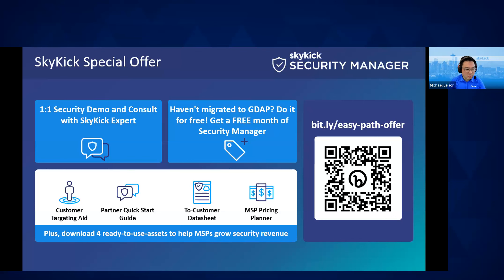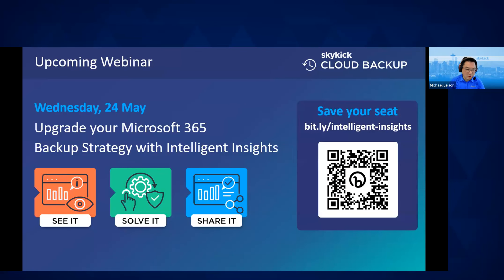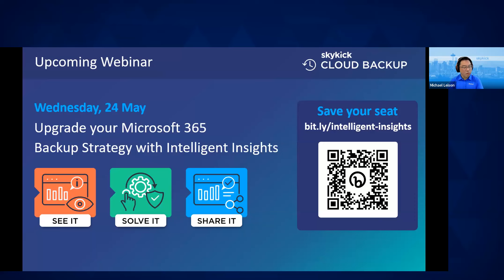One more thing. You came to this webinar — clearly you're one of the forward-thinking partners thinking about security and the value of securing all your data. Security is not one and done. Security is about being proactive, having a plan B. Today we've been talking a lot about Security Manager. One of the things Skykick does is cloud data backup — creating a backup and redundancy copy of all of your Microsoft 365 data — and that should be part of your security strategy. We want to invite you to a subsequent webinar in about two weeks that one of my colleagues will be hosting on exactly that, a backup strategy.